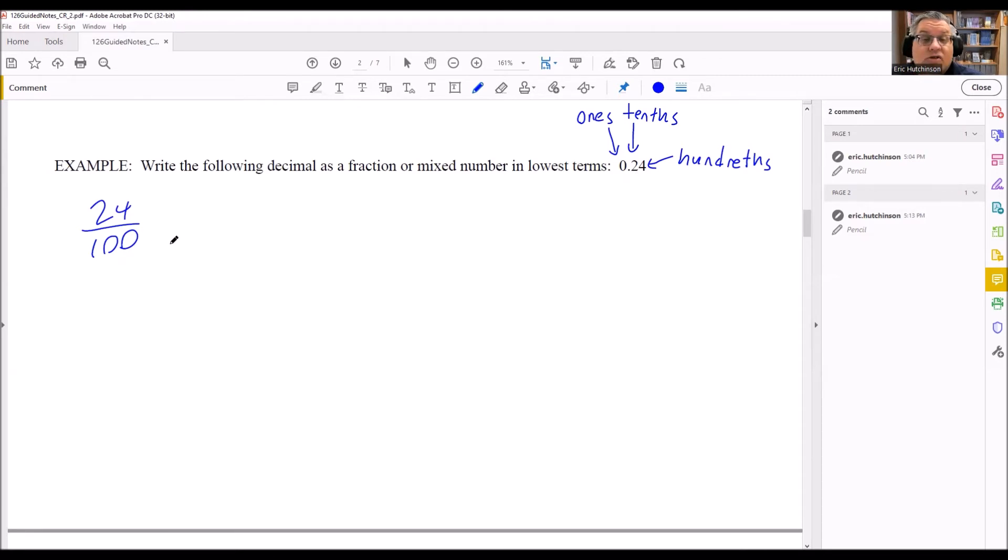But now we want to reduce this in lowest terms. You want to find the largest number that divides into 24 and 100. So if you're not sure what that is just by looking at it, we can always write out the factors of each one.